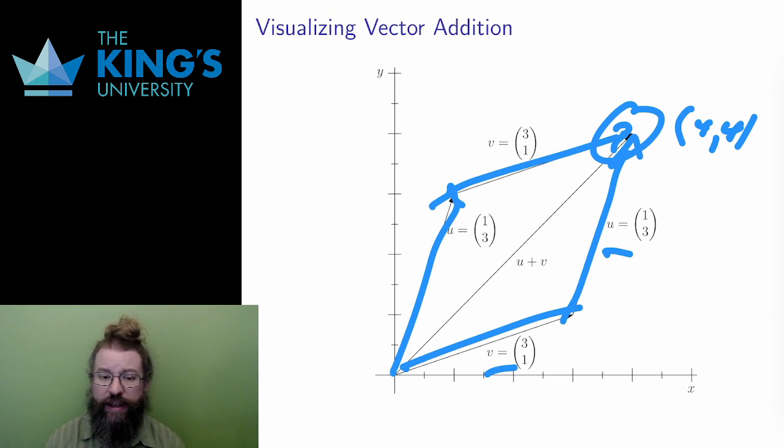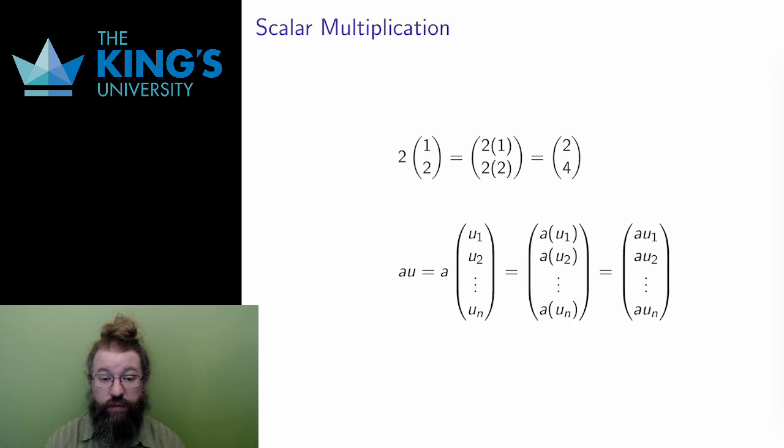I might next ask about multiplication. I could just define multiplication in the same way as addition, component-wise. That's not invalid, but it turns out not to be a particularly interesting or useful operation. Therefore, mathematicians usually say that vectors don't multiply together in the ordinary way. Instead, I will define a scalar multiplication.